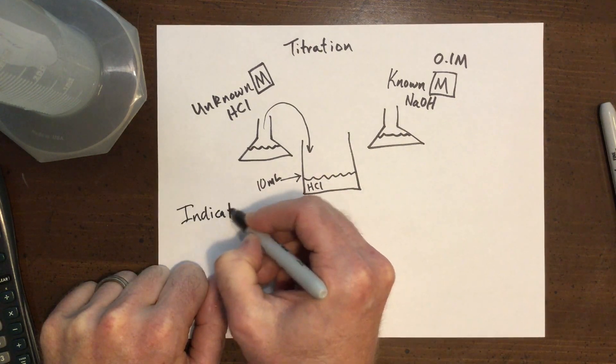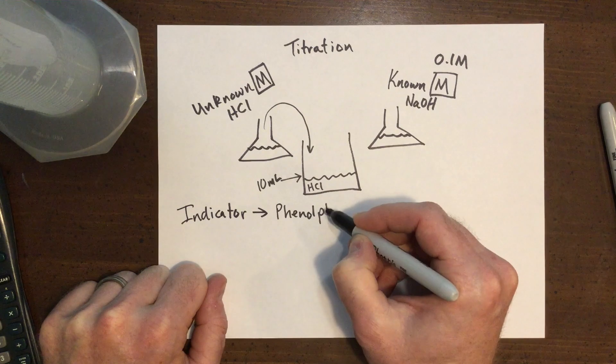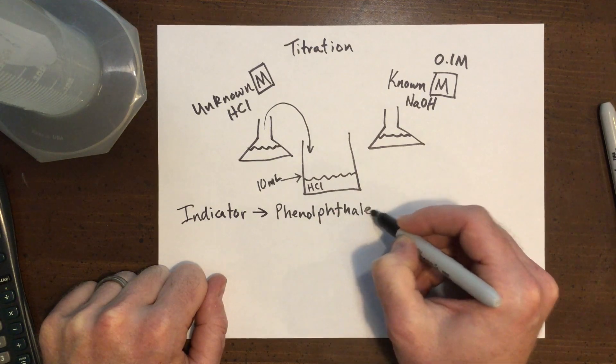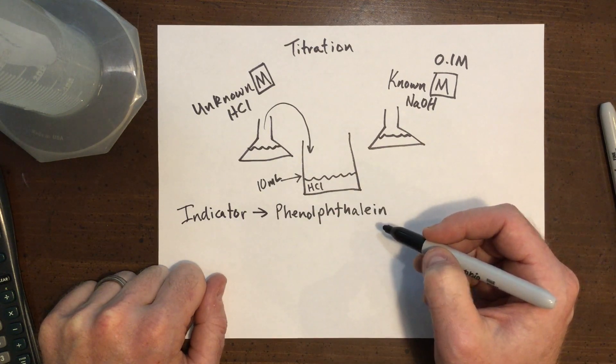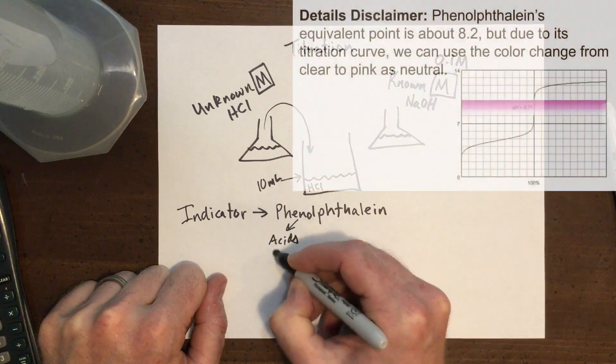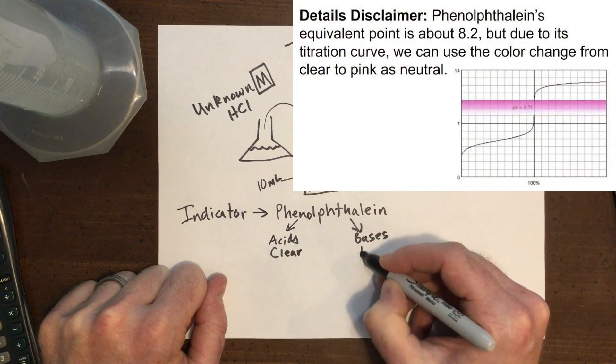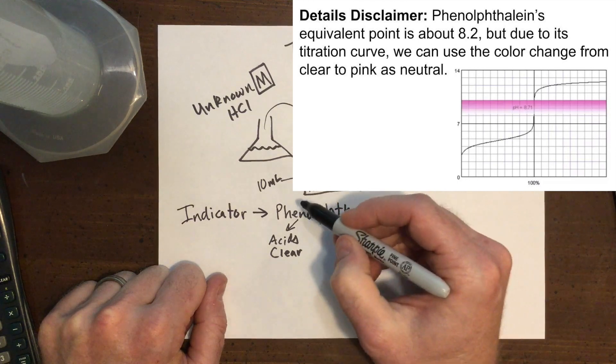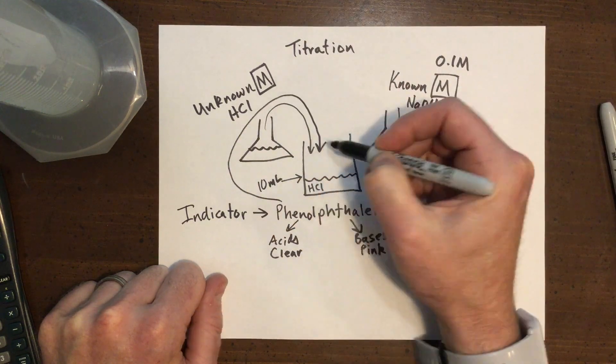Then I'll use an indicator. An indicator is a substance which changes colors in different substances. In our situation, phenolphthalein, this chemical is always clear when it's in the presence of acids, and it changes to a pink color when it's in the presence of bases. Once we add that to the acid solution, it won't look any different. It'll still be clear.